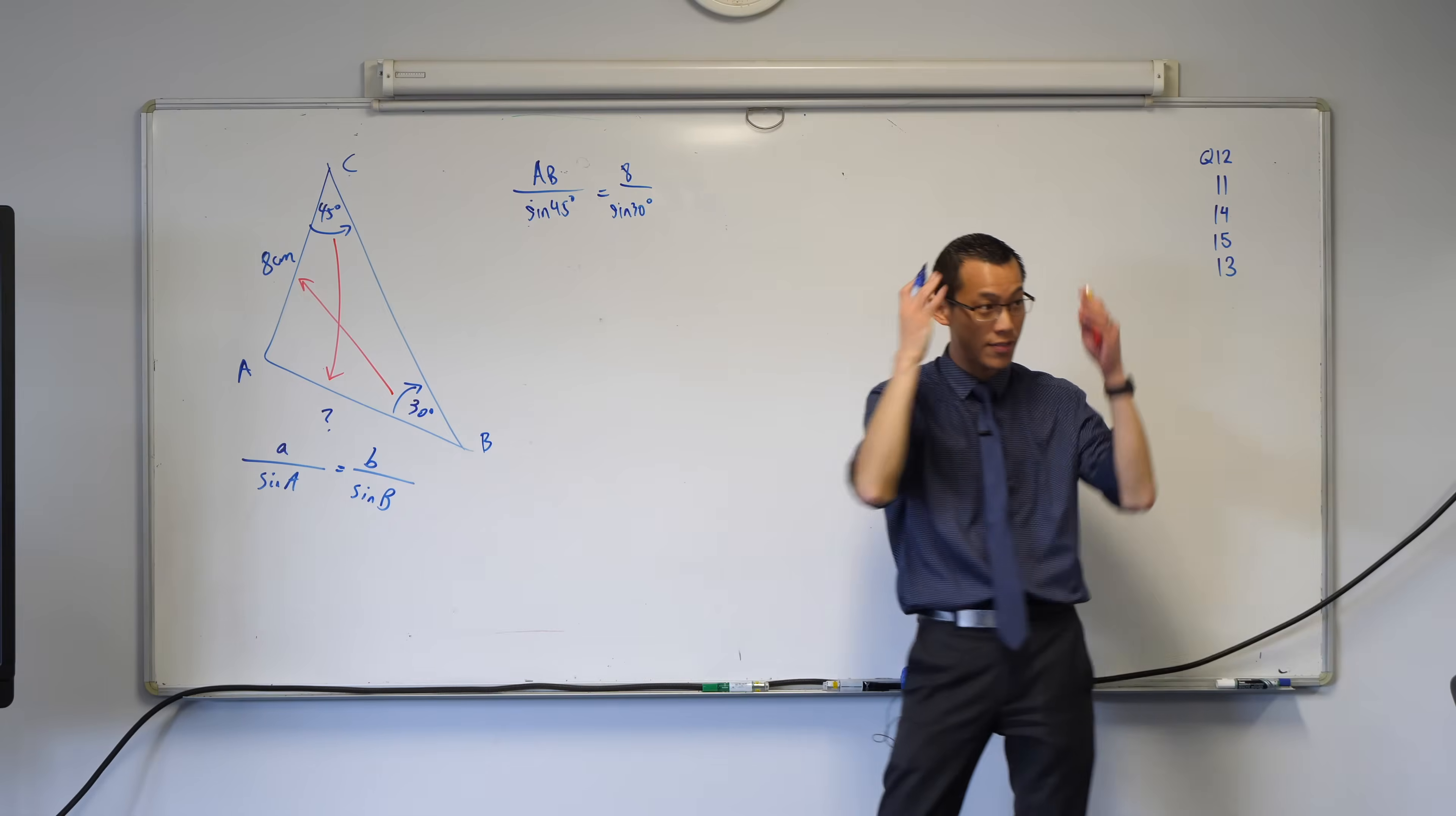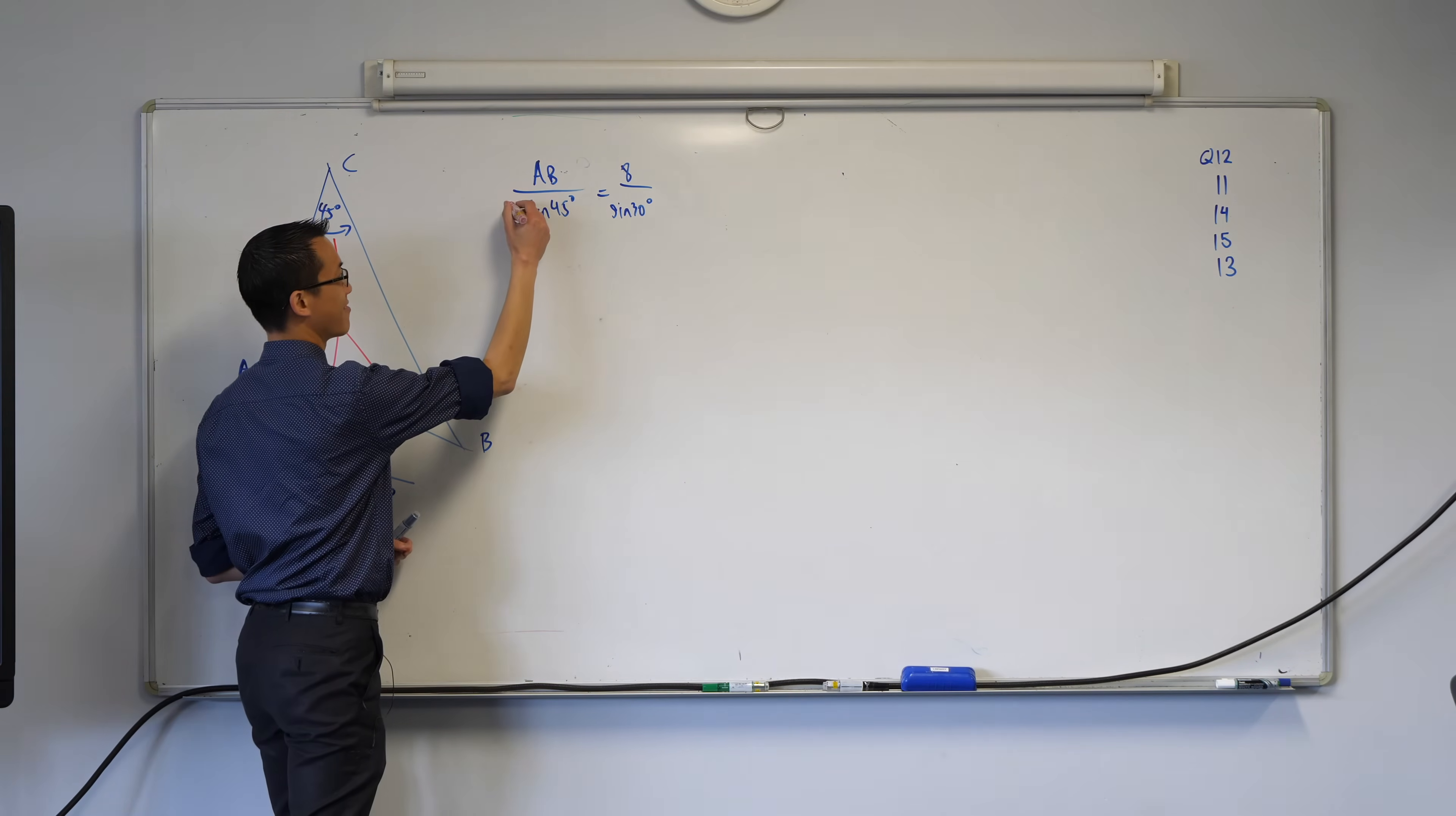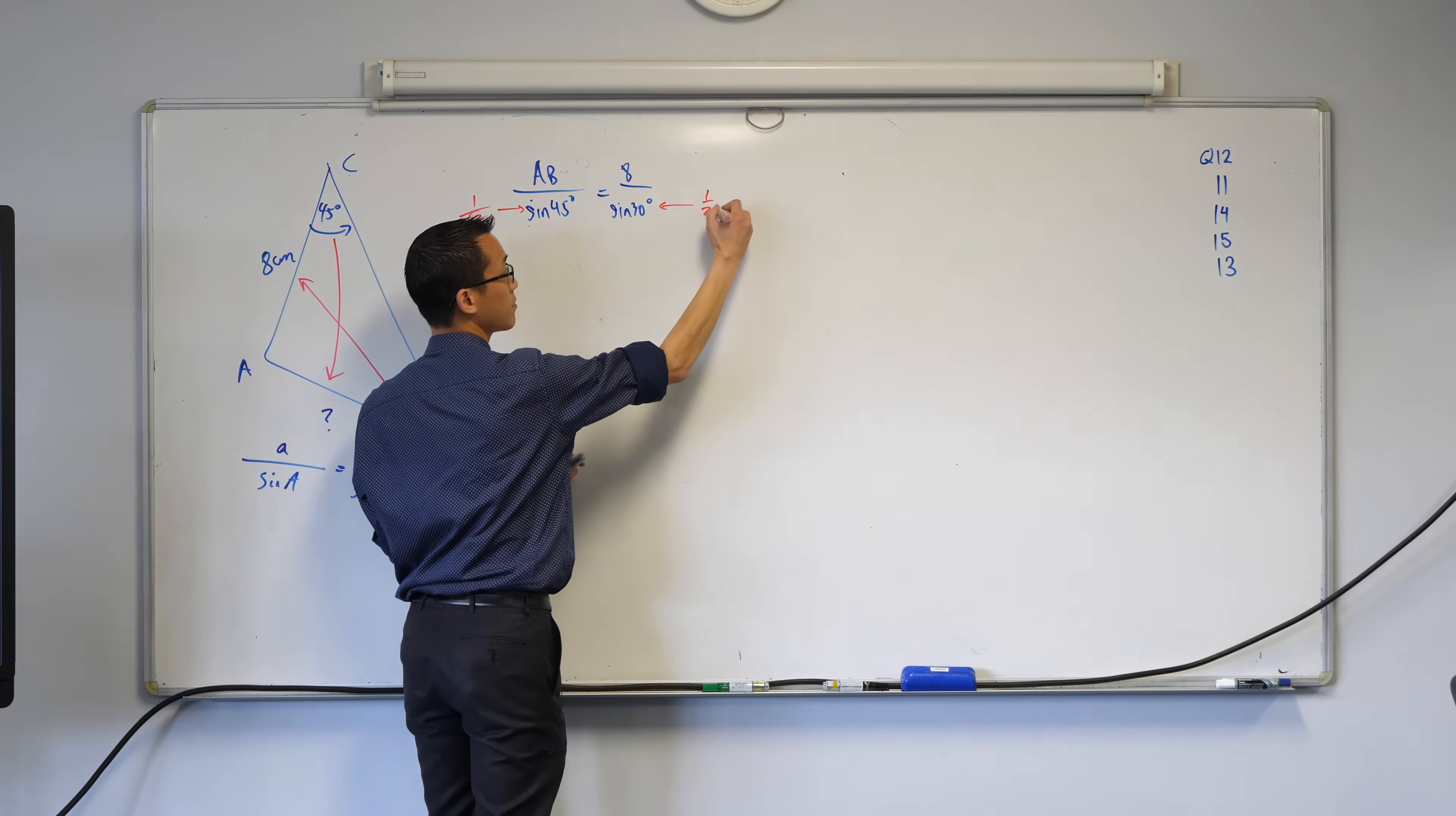If you have your exact values memorized, you could do this quickly. Maybe you need the reference sheet to help you. Sine 45—what is that? It's 1 over root 2. And then sine 30, this is the easiest one—it's 1 over 2, a half.